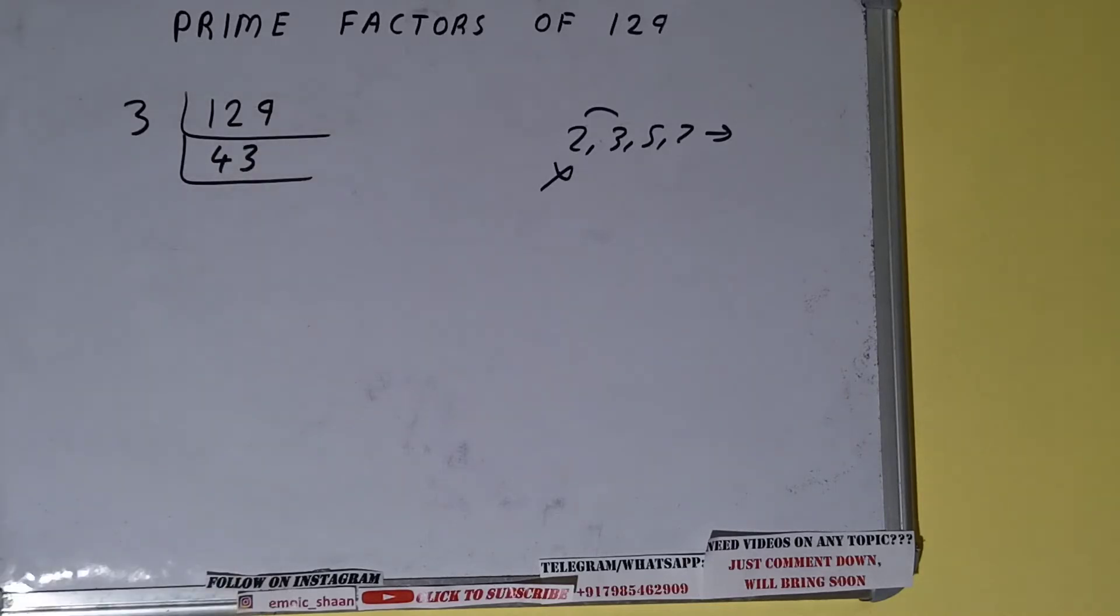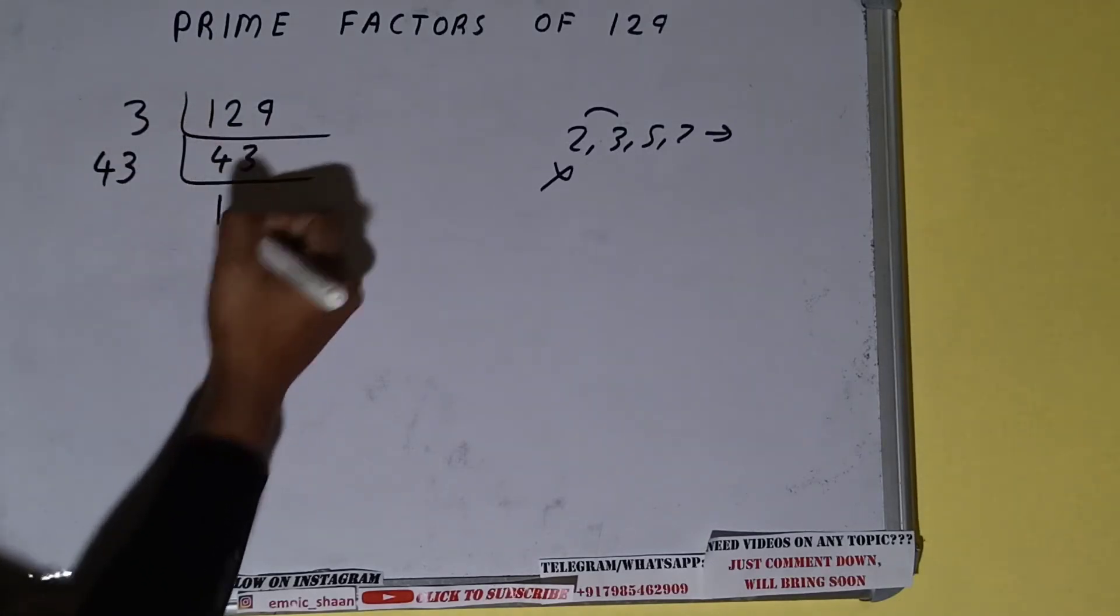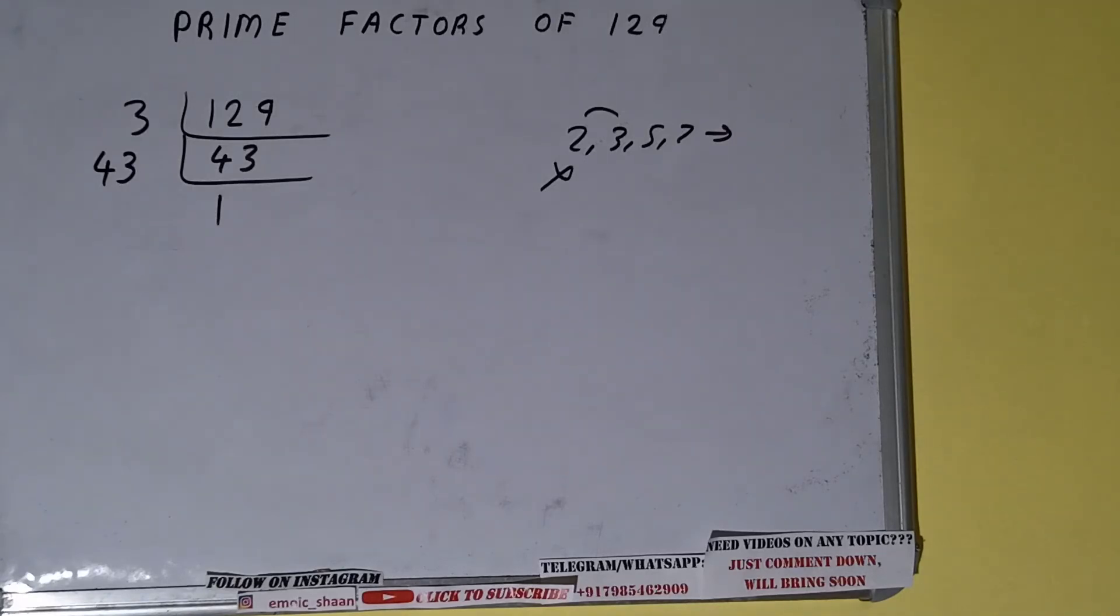Now is 43 again divisible by 3? The answer is no, because 43 is itself prime. So 43 is only divisible by itself, that is 43. And once we do so, we'll be getting 1.